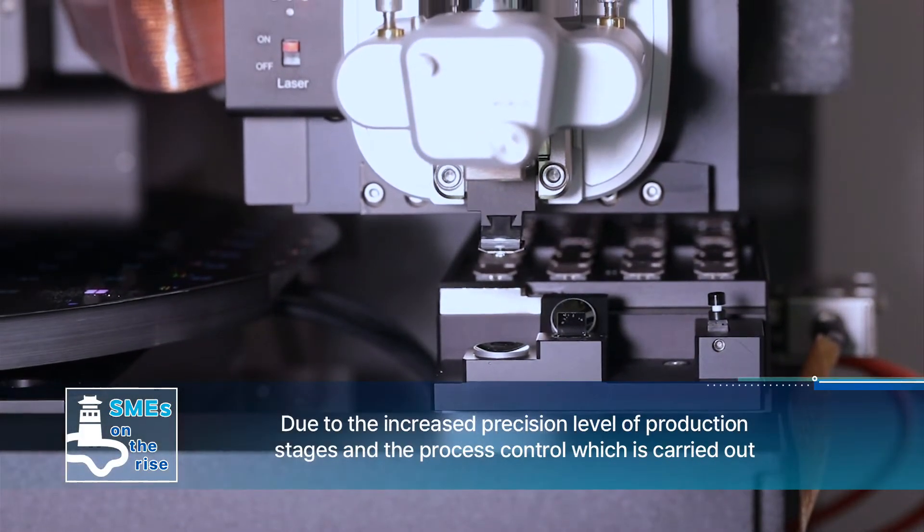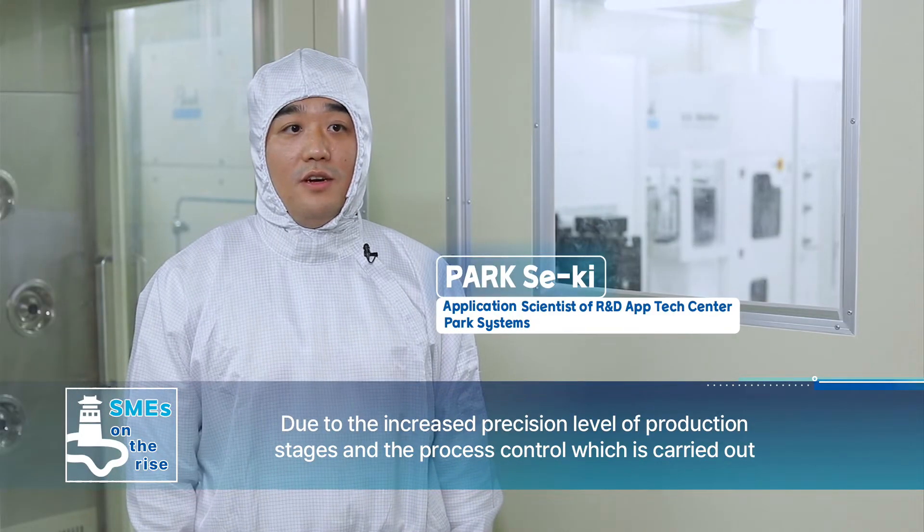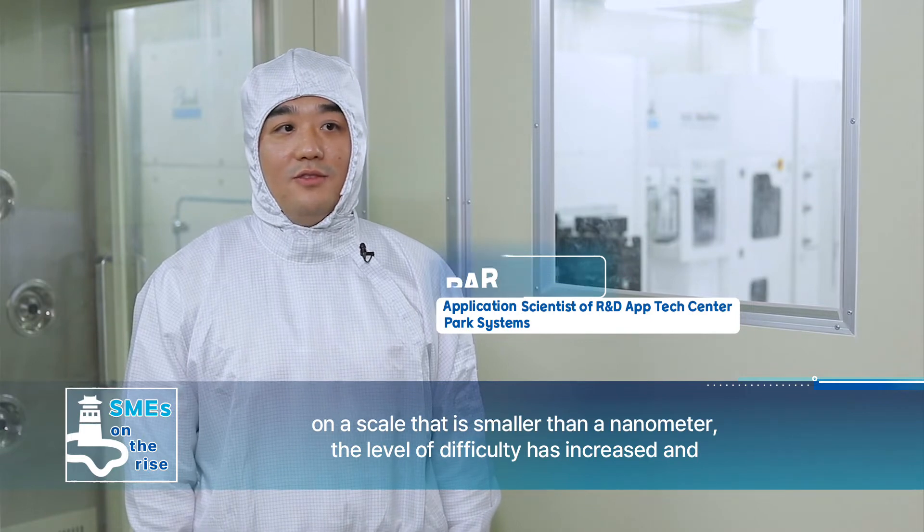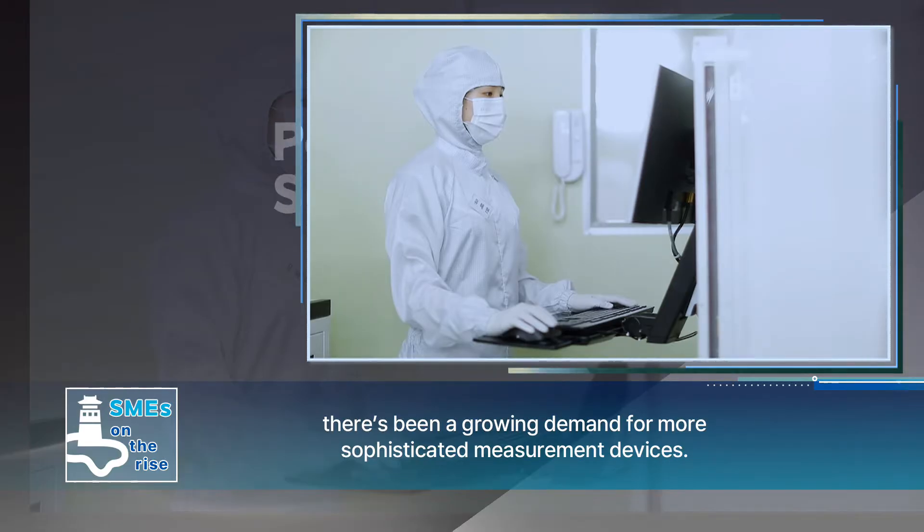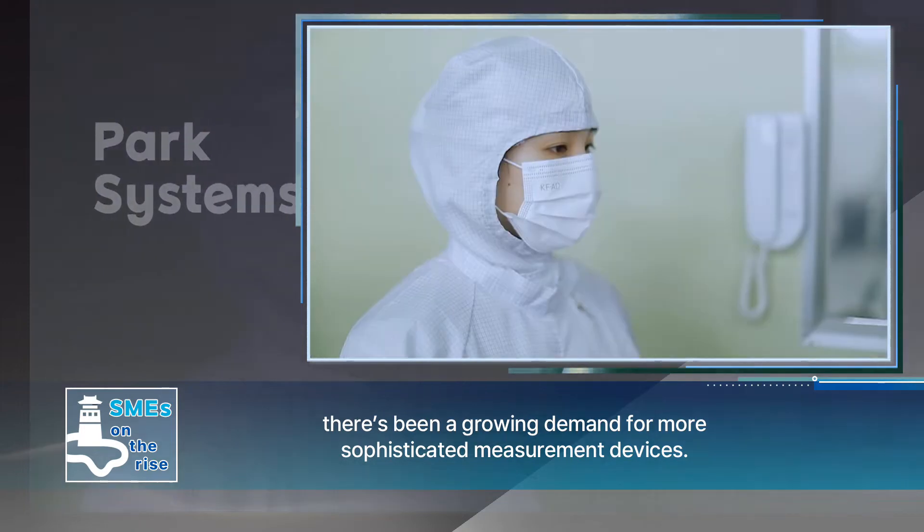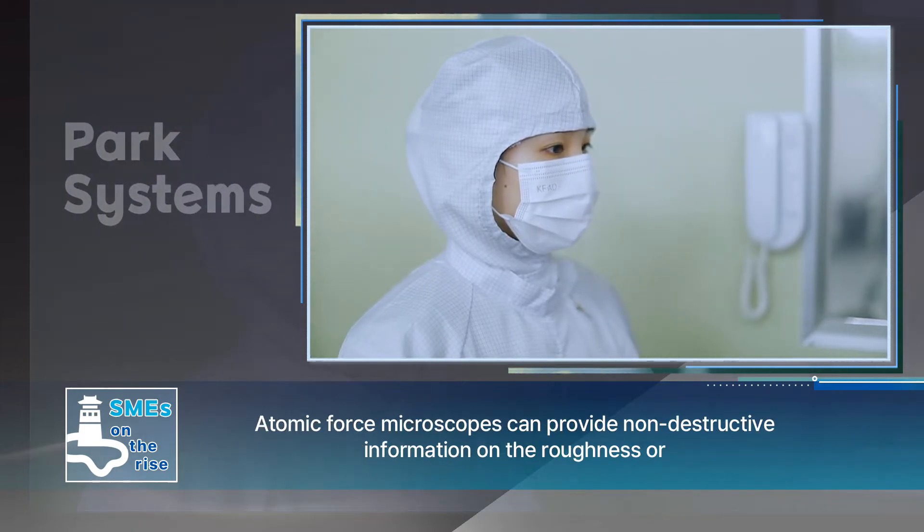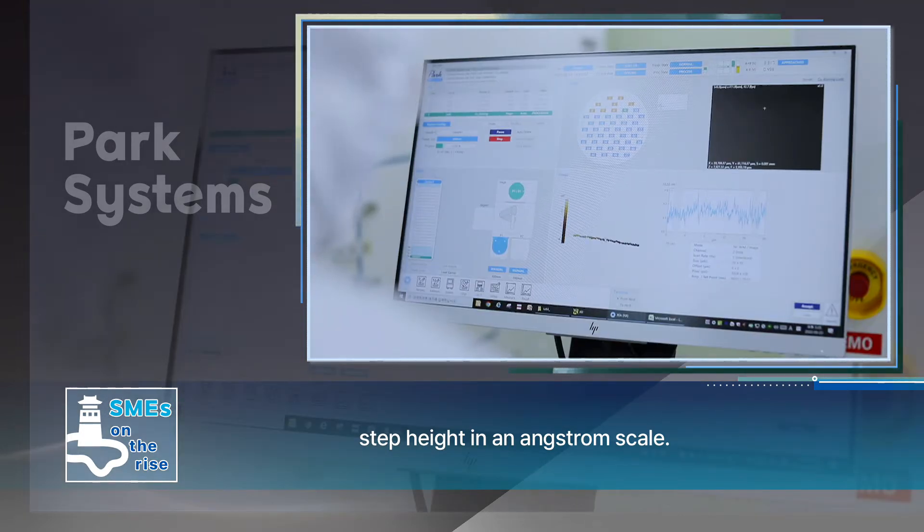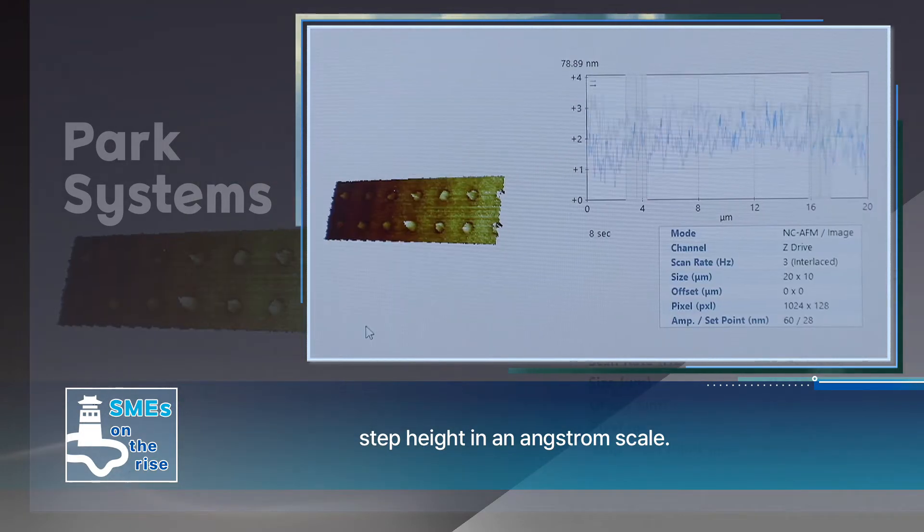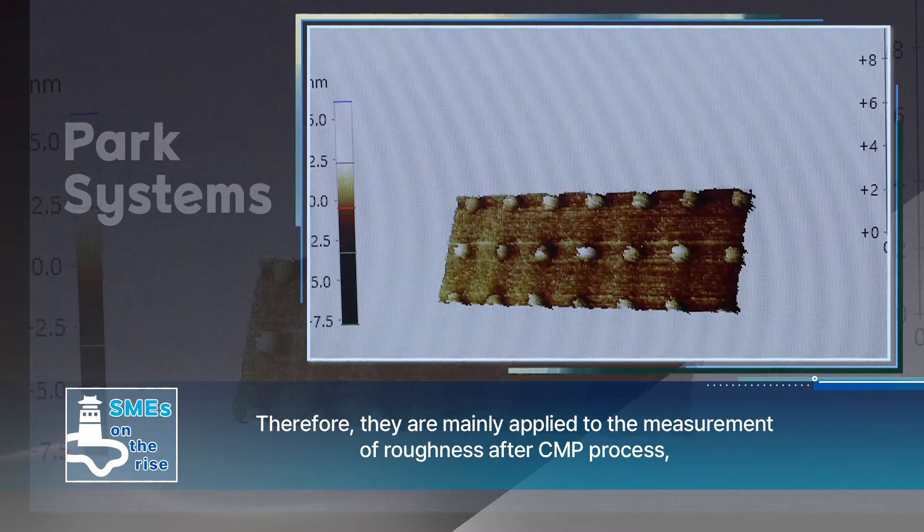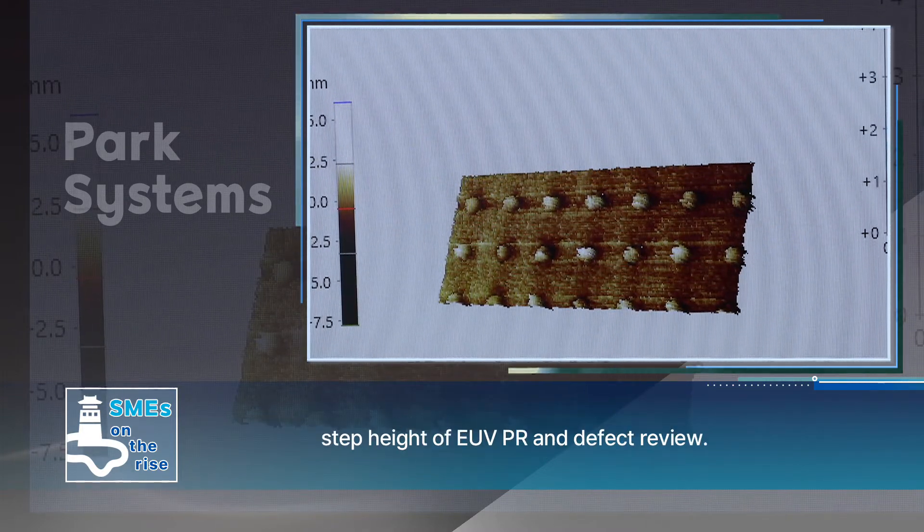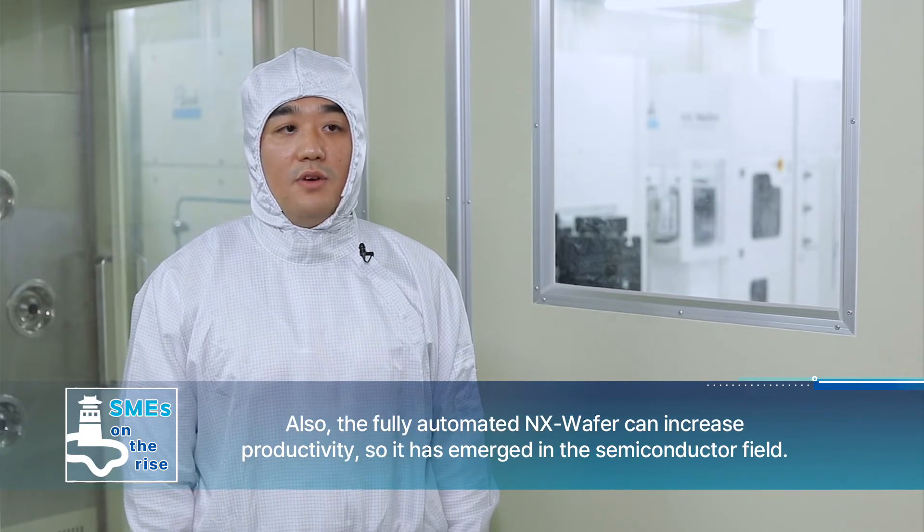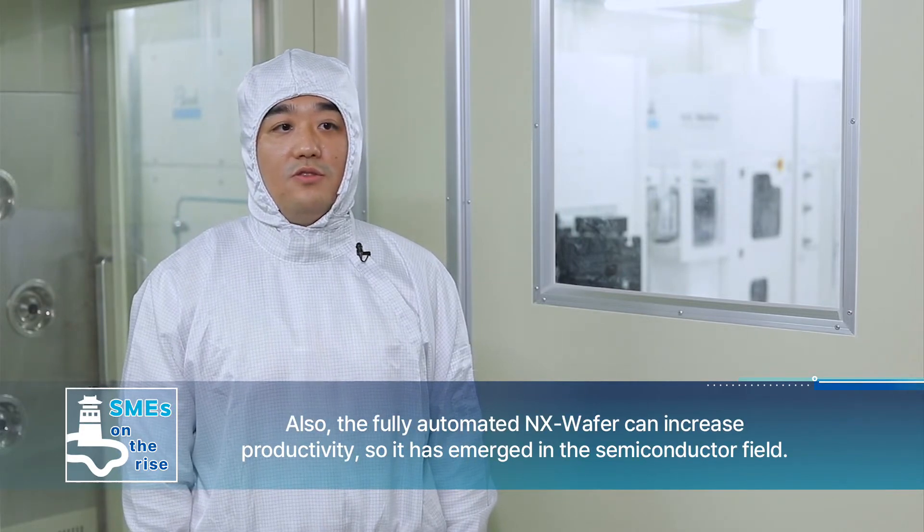최근 공정의 미세화와 nanometer 이하의 공정관리로 인해서 계측 난이도가 증가하고 이를 계측할 수 있는 장비 수요가 늘어나고 있습니다. 원자 현미경은 타 계측 장비가 제공할 수 없는 옹스트롱 이하의 거칠기 및 단차 정보를 비파괴적으로 제공할 수 있어서 CMP 거칠기, EUV PR의 단차, D-Pack 리뷰와 같은 어플리케이션을 주로 활용되고 있습니다. 특히 전자동화된 NX 웨이퍼가 높은 생산성까지 제공하면서 반도체 산업군에서 주목받는 것 같습니다.